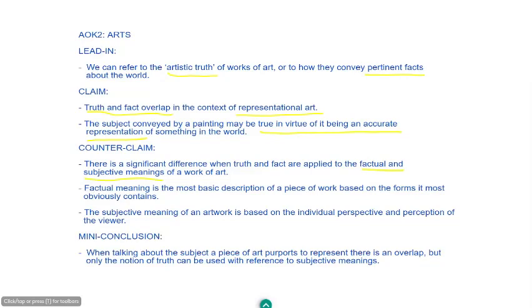Factual meaning is the most basic description of a piece of work based on the forms it most obviously contains. On the other hand, the subjective meaning of an artwork is based more on the individual perspective and perception of the viewer — as such, multiple interpretations or truths of this category are possible. Bringing these ideas together in the mini conclusion, when talking about the subject a piece of art purports to represent there is an overlap, but only the notion of truth can be used with reference to subjective meanings.